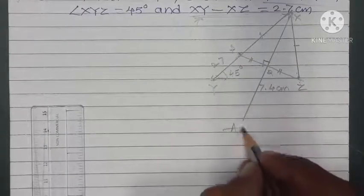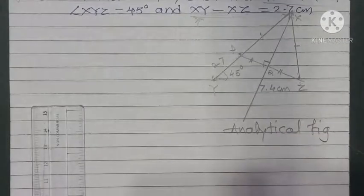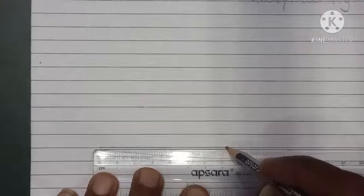This is the analytical figure. Before every construction, it is necessary to draw the analytical figure. Now, to draw the original figure, first draw base YZ = 7.4 cm. Measure from the 0 marking up to 7.4 centimeters — that is, 7 cm and 4 mm. The base YZ is 7.4 centimeters.